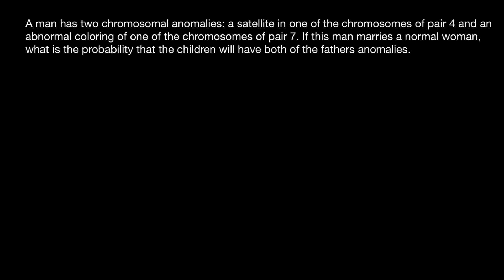A man has two chromosomal anomalies: a satellite in one of the chromosomes of pair four, and abnormal coloring of one of the chromosomes of pair seven. If this man marries a normal woman, what is the probability that the children will have both of the father's anomalies?